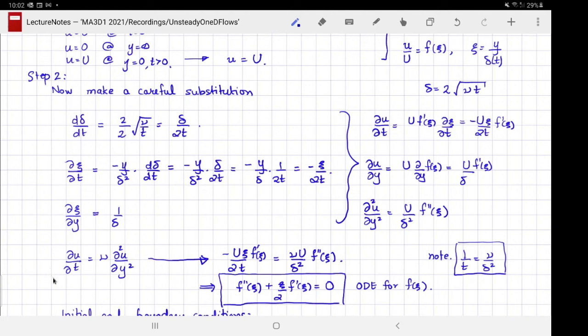Finally, ∂ξ/∂y is just 1/δ. Our differential equation is now: ∂u/∂t—u is capital U times f of ξ, so U times f′ of ξ times ∂ξ/∂t using the chain rule. I've calculated ∂ξ/∂t here, so I substitute that. ∂u/∂y: I do the same thing—U times f′ of ξ times ∂ξ/∂y, which is 1/δ. Simple application of the chain rule.